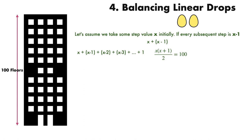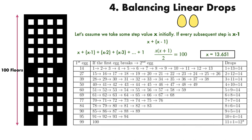Because there are 100 floors in our problem, we solve for x when the summation equals 100. So x(x+1)/2 = 100. After solving this equation, we get x equals 13.651. This means we want to start dropping from floor 14, jump up 13 floors to drop from floor 27, jump up 12 floors to drop from floor 39, and so on. Our worst case scenario is then a drop count total of 14.